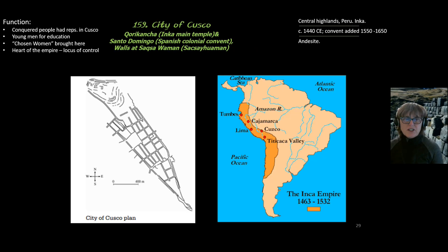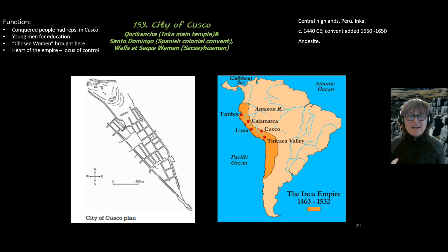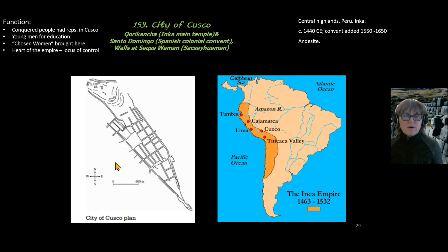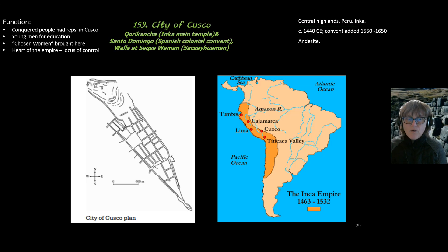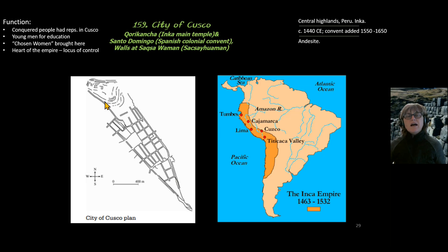In terms of function, the city plan had four quarters. An incredible form of control by the Inca empire was to bring the sons of the leaders of conquered regions into the city of Cusco, make them live there, and make them learn the Inca ways. These young men would have been brought to each of the four quarters and lived in their assigned quarter. Women — chosen women from all areas of the empire — were also brought here and kept captive, where they would have made chicha beer from corn and textile clothing that we'll see in a couple of images. The function of the city is that it is the heart of the empire — the locus of control, designed like a puma to emulate all the power of that incredible large cat.